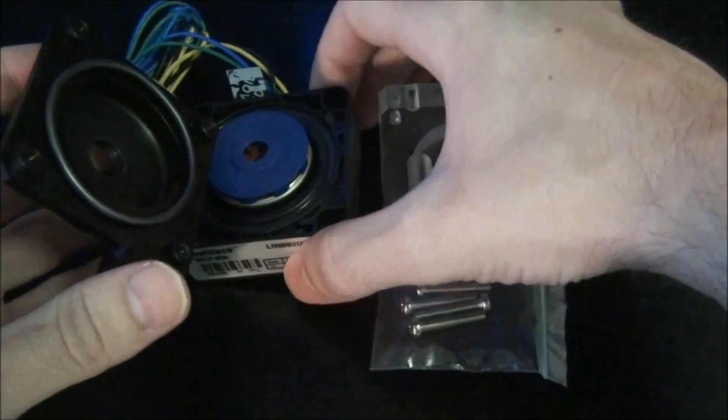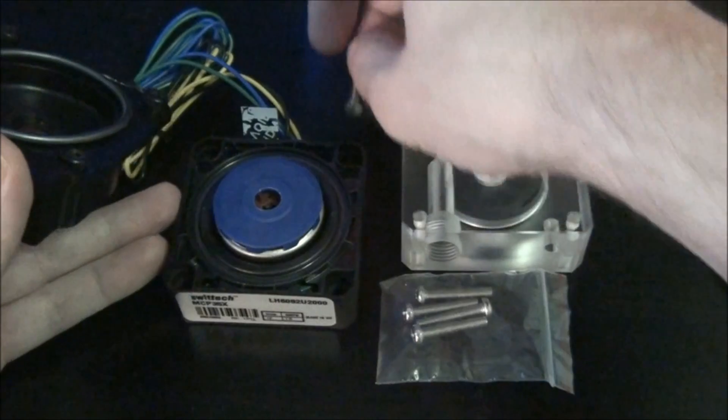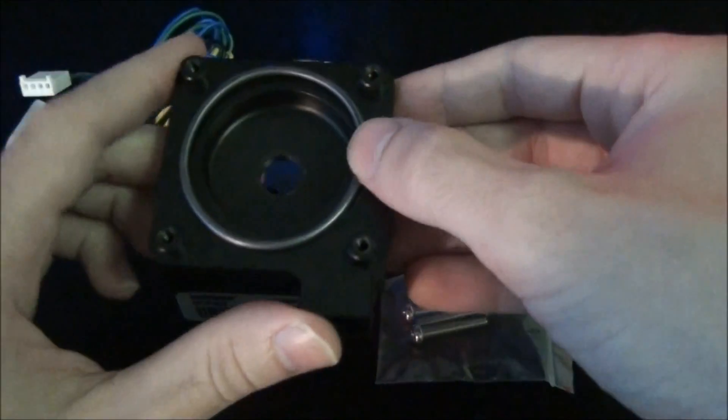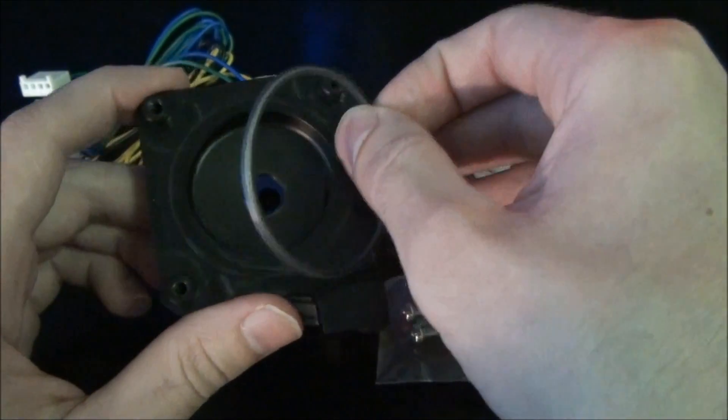Once the bolts are removed, pump top just comes straight off. Now you can see the insides of the pump. So there's the inside of the old top there. And you've got an o-ring.